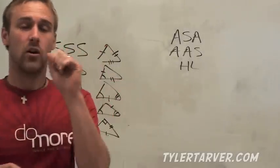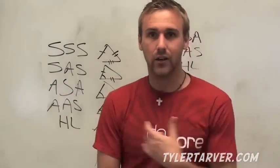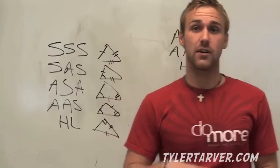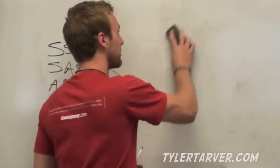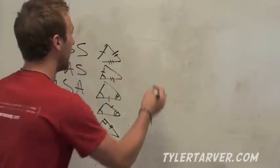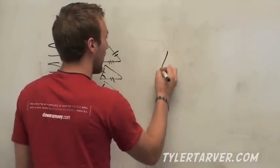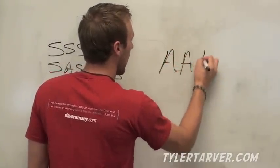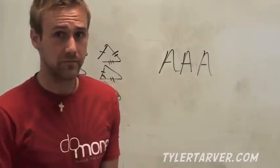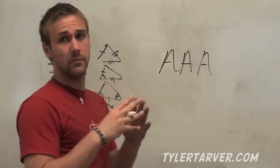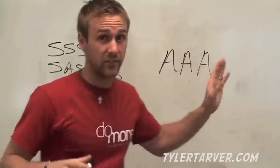It's easier to remember what you can use. There are two combinations that seem like they should work but don't. The first is angle-angle-angle — that will not prove two triangles are exactly the same, because the triangles can be bigger or smaller. You can have the same angle measures but different side lengths.